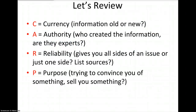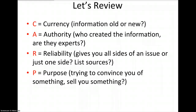So now let's review. CARP: currency, authority, reliability, and purpose. When we're using the currency test, we're asking: is this information new enough for me to use for my research? When we're using the authority test, we're asking: are these people experts — do they know what they're talking about? When we're using the reliability test, we're asking: is this website giving me all sides of the issue or just one side, and are they giving me sources I can use to check the information? When we're using the purpose test, we're asking: are these people trying to sell me something — an idea or a product? When you use these four tests — currency, authority, reliability, and purpose — you will evaluate the website and determine whether or not it's something you can rely upon as one of your research sources.